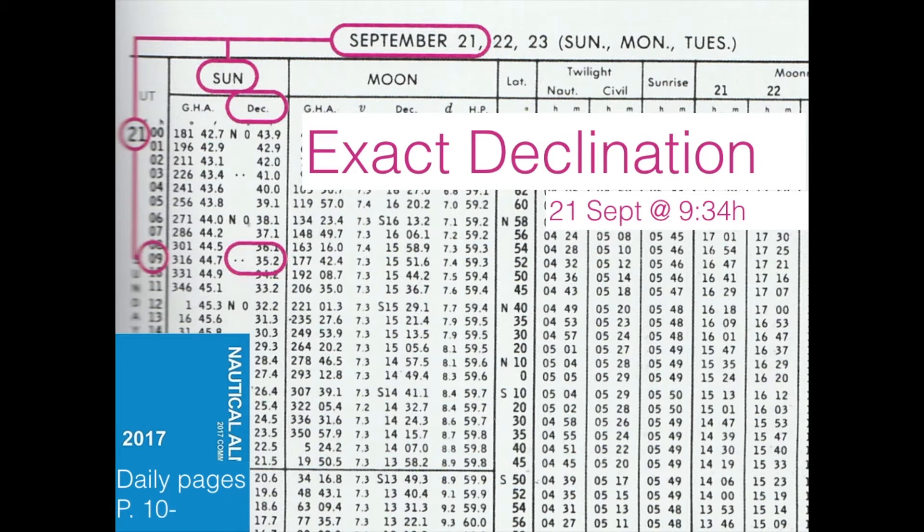Now, one hour later, at 10 o'clock, one row further down, it says north, zero degrees, 34.2 minutes. So you can see in one hour between nine o'clock and 10 o'clock, it only changes one minute.